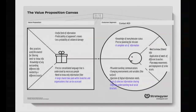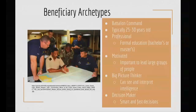A fuller information picture is a potential gain. Our beneficiary archetype was updated to include the battalion command. We raised the age range because battalion commanders tend to be somewhat older — O3 and up. Most other characteristics remained the same: professional, motivated, and in need of smart, fast decision-making.